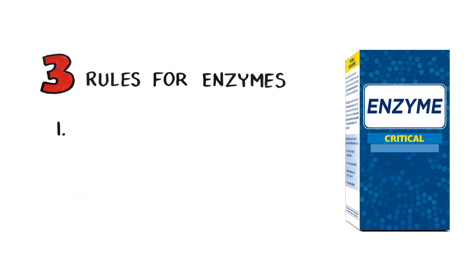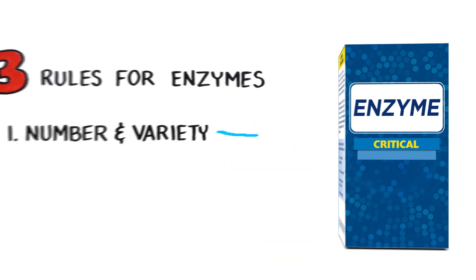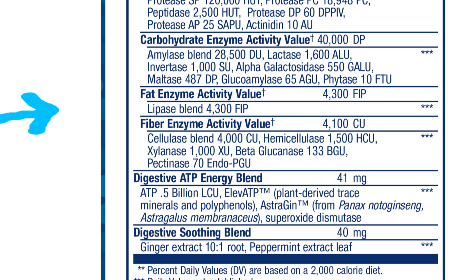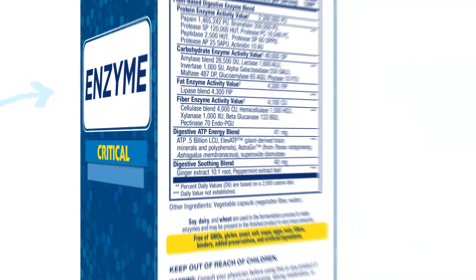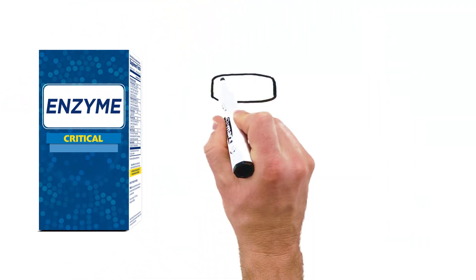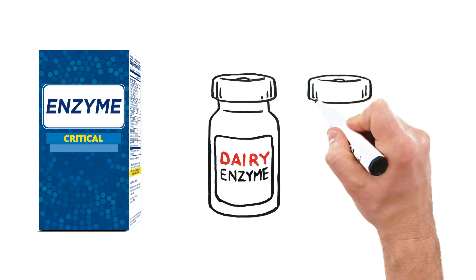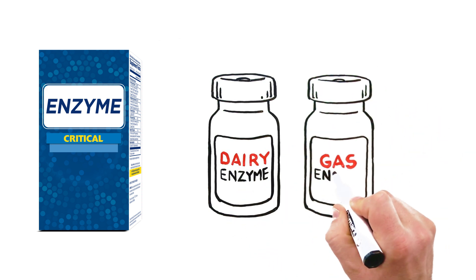The first rule is to look at the number and variety of enzymes. You want a formula to include several different types of plant-based enzymes to help digest the different foods you eat. Believe it or not, many enzyme formulas contain just one type of enzyme, which would be fine if we ate just one type of food.